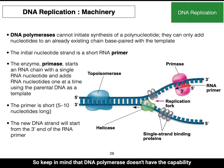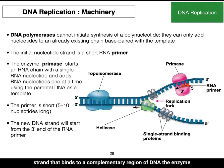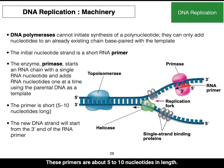DNA polymerase cannot initiate synthesis on its own — it can only add nucleotides to an already existing chain base-paired with the template. Therefore, a primer is required. A primer is a short RNA strand that binds to a complementary region of DNA. The enzyme primase makes this primer using the parent strand as the template; these primers are about five to ten nucleotides in length.